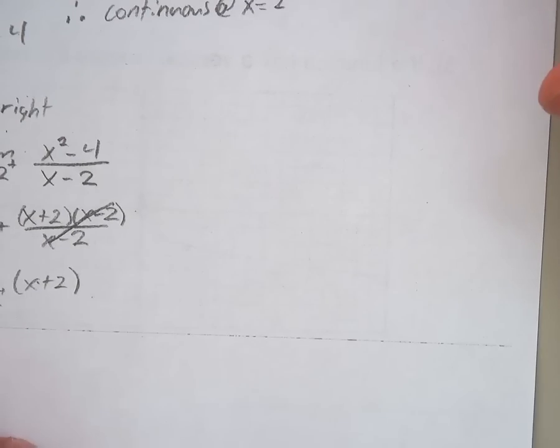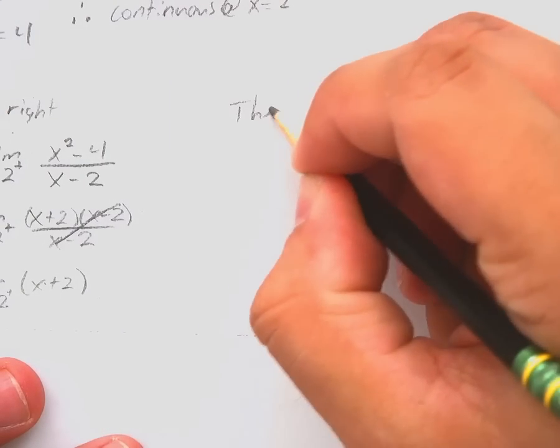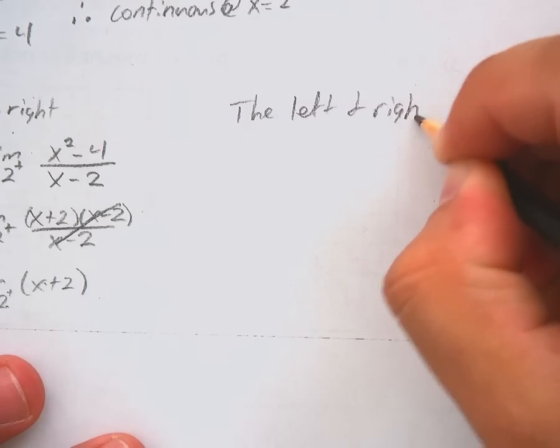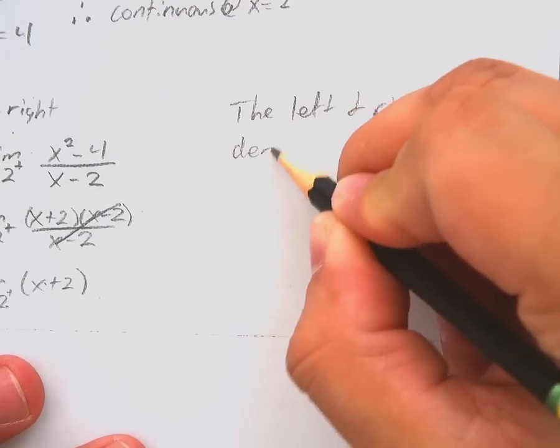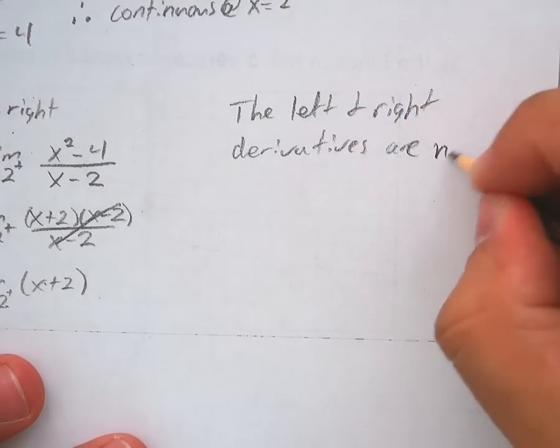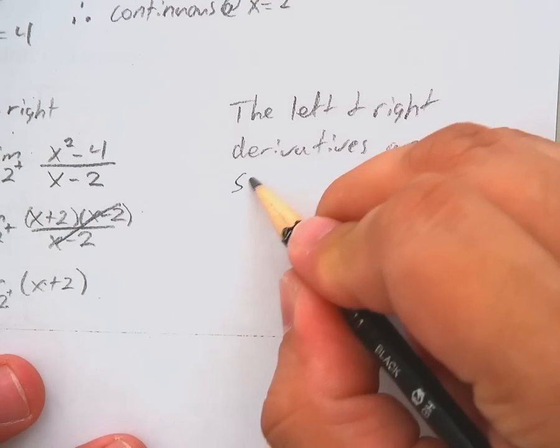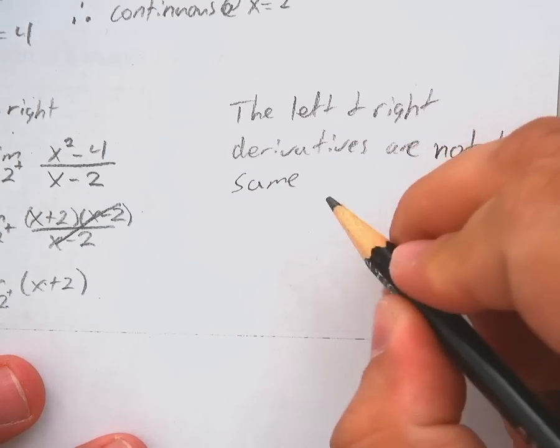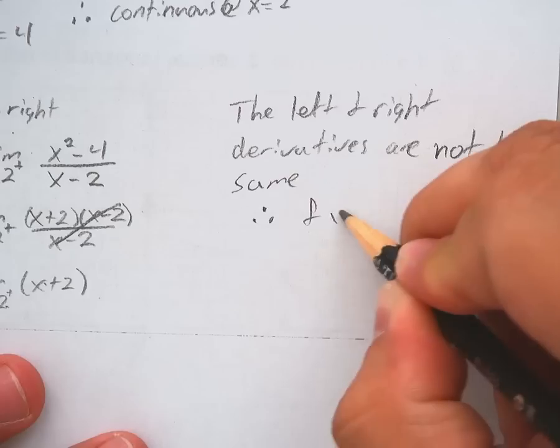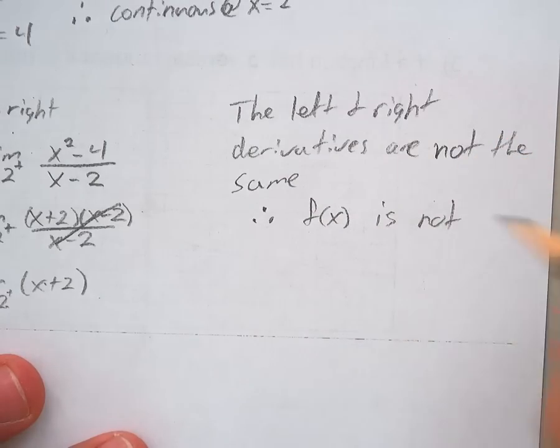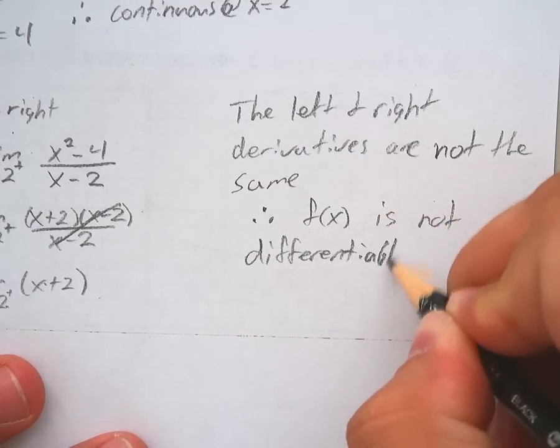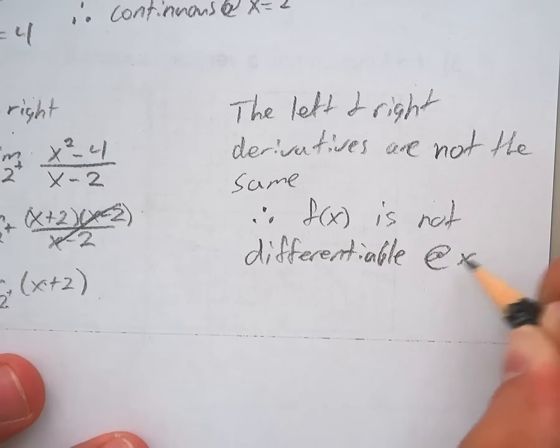The derivative from the left and right are not the same. Because of that, I'm going to write that down here. So the left and right derivatives are not the same, therefore f of x is not differentiable at x equals 2.